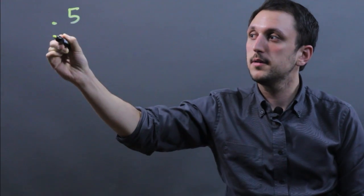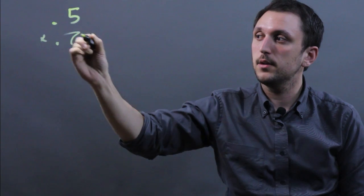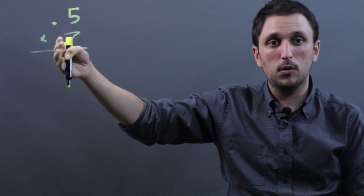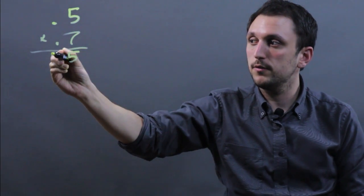So let's say we have 0.5 times 0.7. Well, the way we multiply with decimals is we just treat it as normal and we say 5 times 7 and that's going to be 35.